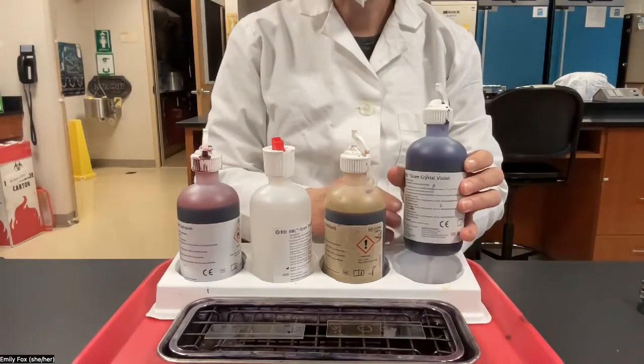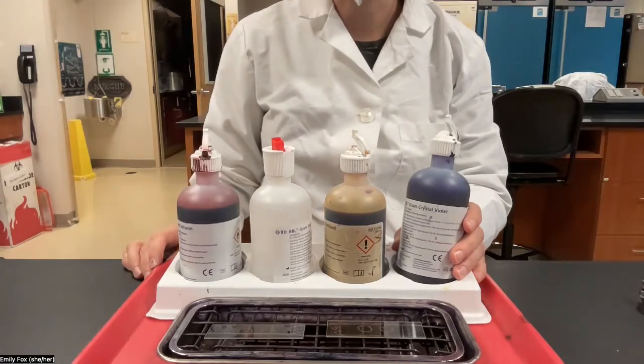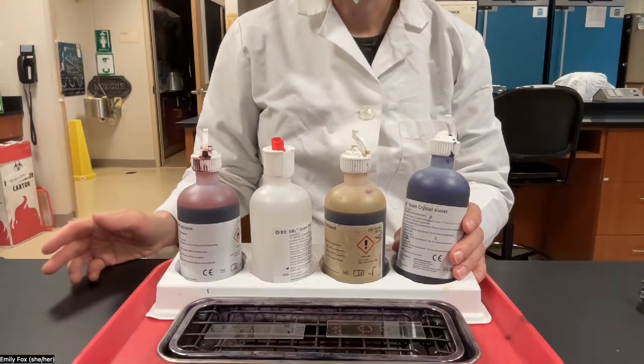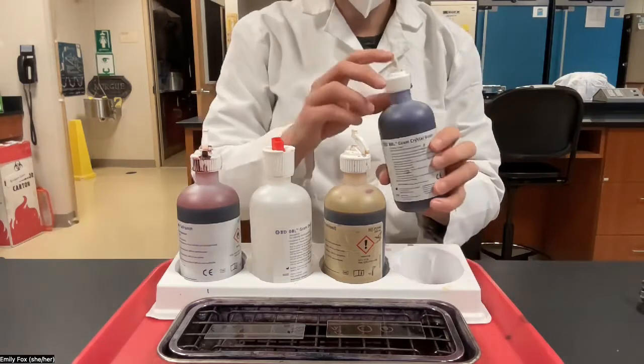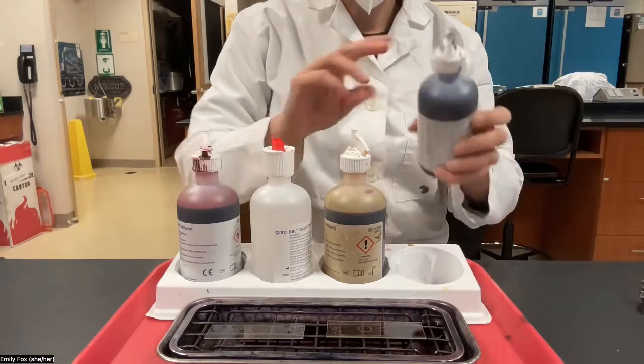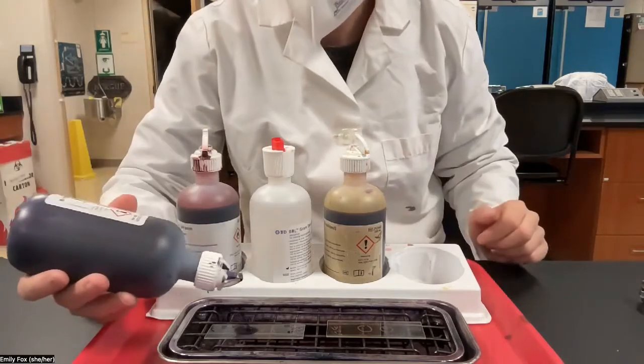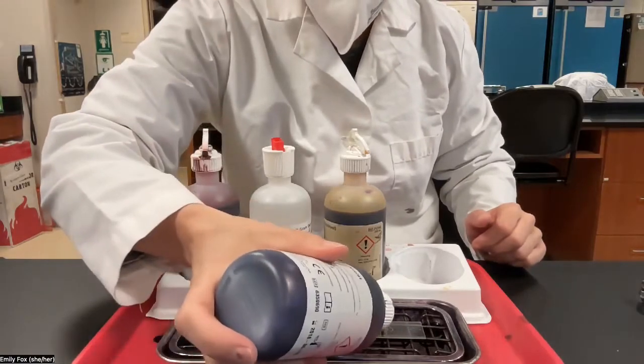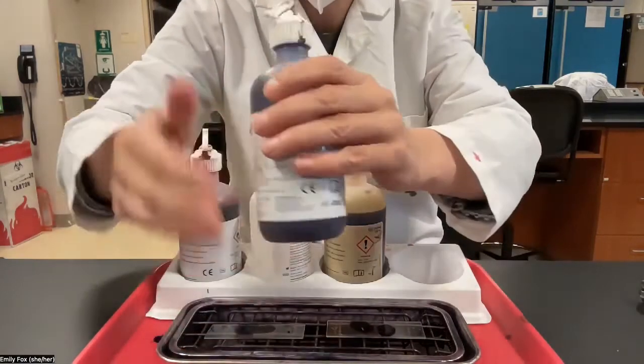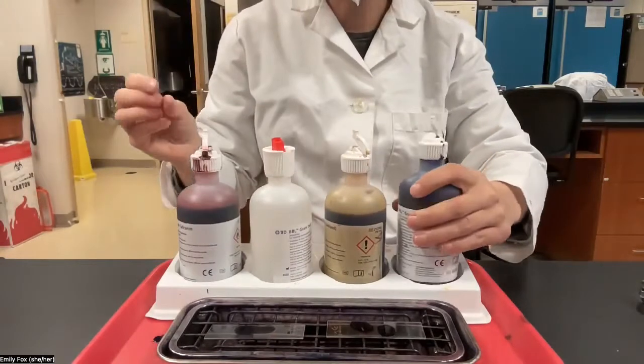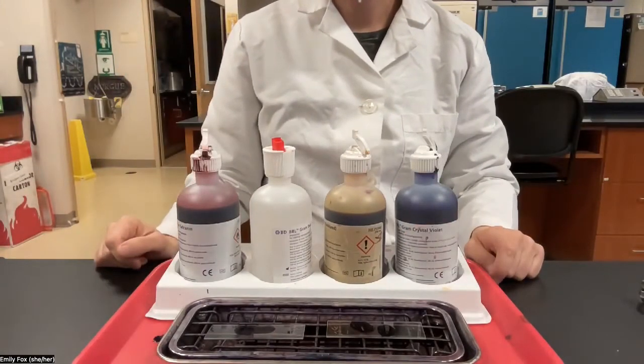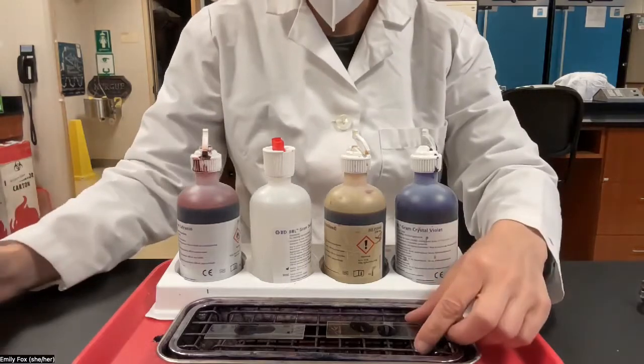I'm going to start with the crystal violet, and you're going to want to use a timer of some kind. You can either use a cell phone timer or watch the clock in the classroom. So I'm going to just make sure that I add crystal violet to both of my slides. And this is going to stain for one minute. Okay, one minute's up, time to rinse.